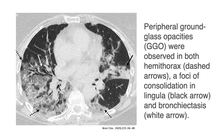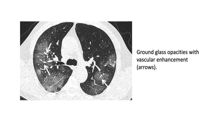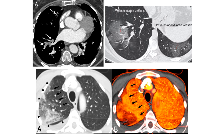Another example of ground glass opacities: a solid black arrow showing lingual consolidation on the left side, a white arrow showing bronchotactic changes, and a broken arrow showing ground glass opacities in both hemithoraxes. X-ray and CT comparison of the same patient at the same stage: the left image shows diffuse reticular alteration, the middle shows peripheral ground glass opacities, and the right shows dense extensive consolidations. Another CT shows ground glass opacities with vascular enhancement and dilated vessels.